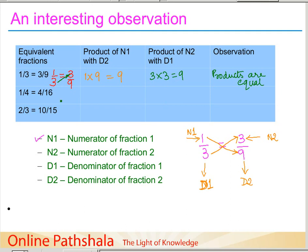Let us try this with one more example. We have 1 by 4 equals 4 by 16. We multiply the numerator of the first with the denominator of the second: 1 times 16 is 16. And then we multiply the denominator of the first with the numerator of the second: 4 times 4 gives us 16. The observation is that these two products are again equal.